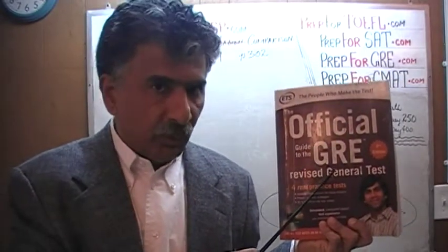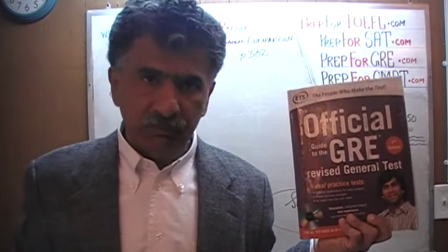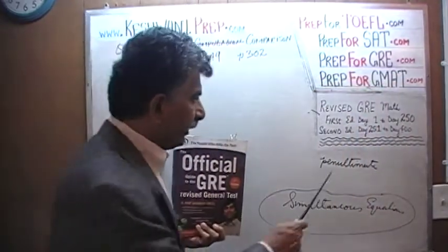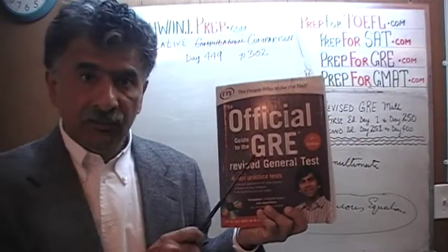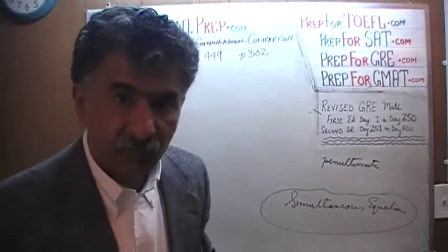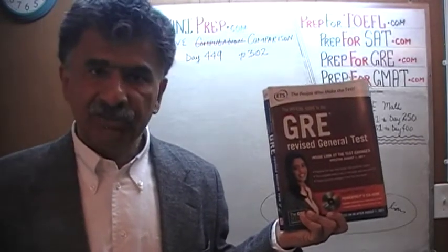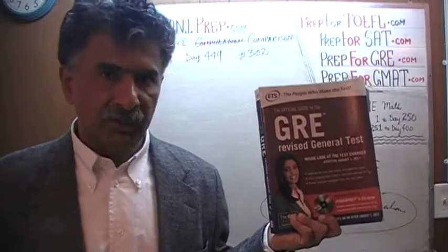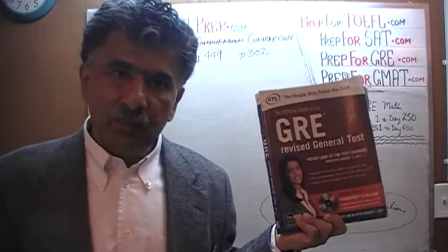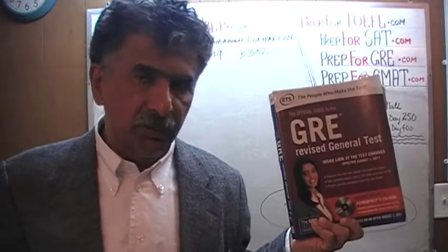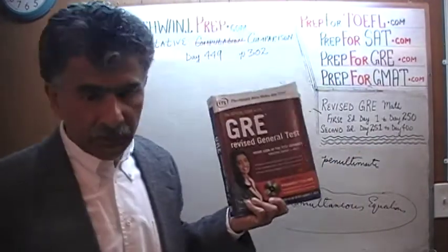We are almost finished doing all the problems from this book. If there is any math problem that gives you trouble and you wish to watch the solution to it, you will find the solutions to almost all the math problems from this book from day number 251 through 400. This book contains the exact same problems in the vast majority of cases, appearing on the same page numbers as the first edition of the Revised GRE. We are done doing all the problems from that book, and the original solutions are from day number 1 through 250.